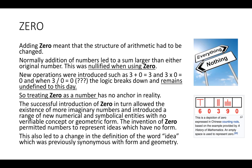Treating zero as a number has no anchor in reality — there's nothing in nature that can help us. Because the introduction of zero was accepted, it also allowed more imaginary numbers and a whole range of numerical and symbolical entities which had no verifiable concept or any geometric form whatsoever. The invention of zero permitted numbers to represent ideas which had no form or geometry, and this basically also led to a change in the meaning of the word 'idea,' which was previously synonymous with form and geometry.